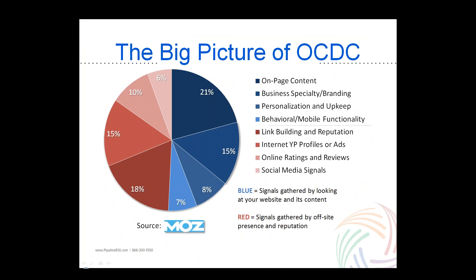You can almost divide the pie chart into two things evenly. On the right you've got the blue slices — all the things you do to your site, whether it's content, branding, or making it easier to use and understand. On the left, the red slices, are things you do with your site or branding off-site — to get reputation, votes, links, and other sources of traffic. The two main things we'll talk about today are the content side and the marketing side, with lead capture in between.